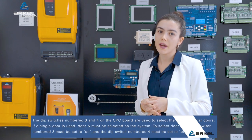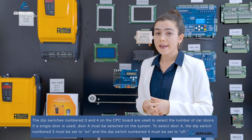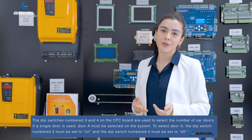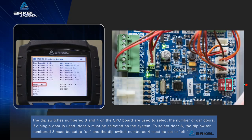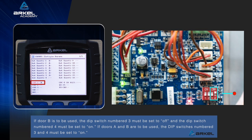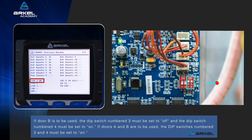Dip switches 3 and 4 on the CPC board are used to select the number of car doors. If a single door is used, door A must be selected: dip switch 3 must be set to on and dip switch 4 must be set to off. If door B is to be used, dip switch 3 must be set to off and dip switch 4 must be set to on. If doors A and B are used, dip switches 3 and 4 must both be set to on.